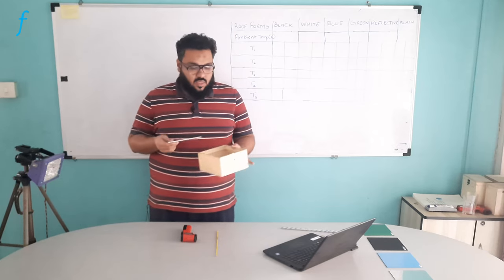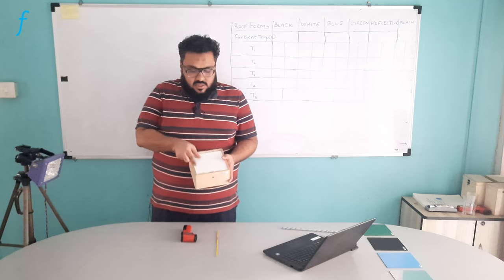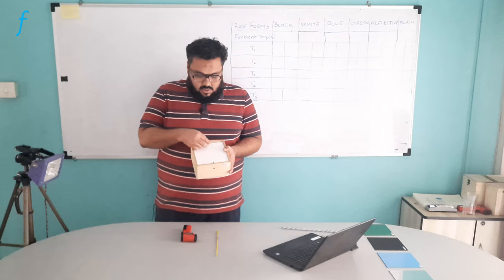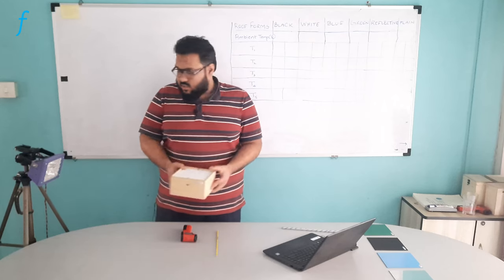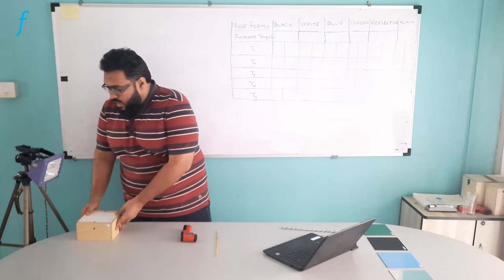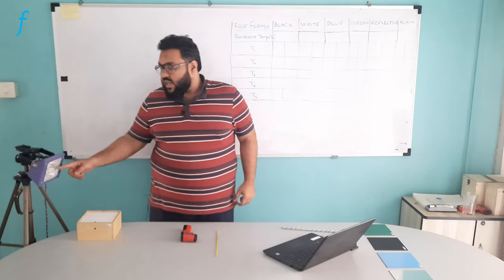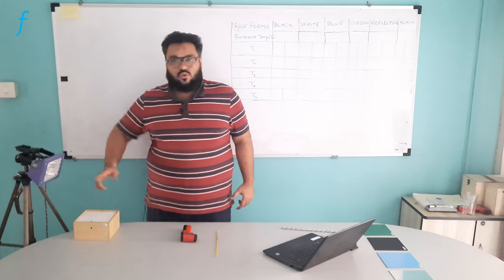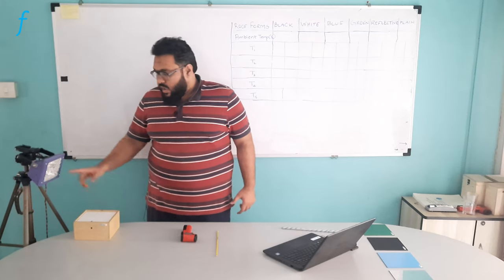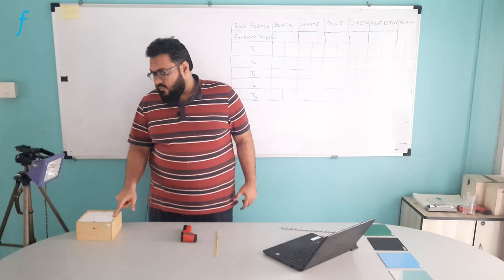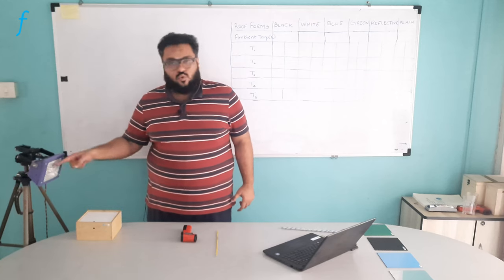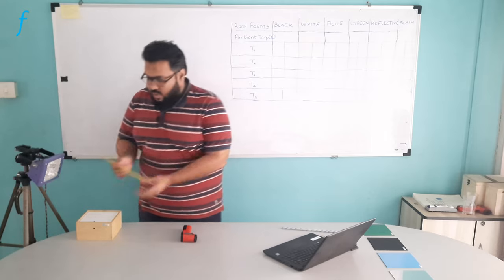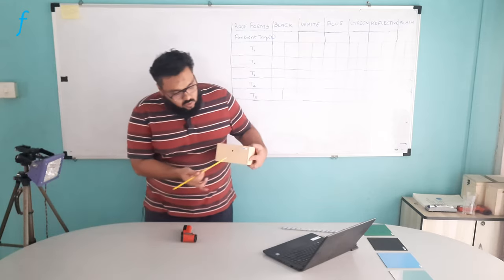We have the box here and we have the colored panel. This panel will go inside this slot, and we will lock it. Once locked, it needs to be kept such that the distance between the halogen tube and the top of the panel should not be more than 50 centimeters and should be in line of the heat falling through the halogen tube. The thermometer will go inside this hole that we have here.